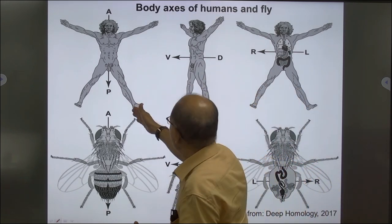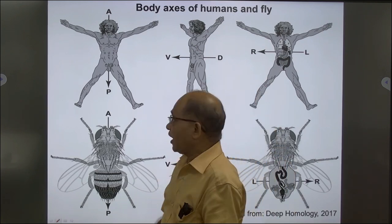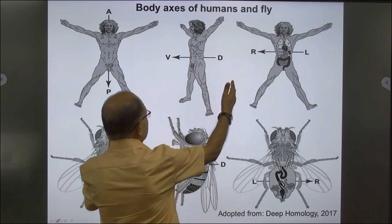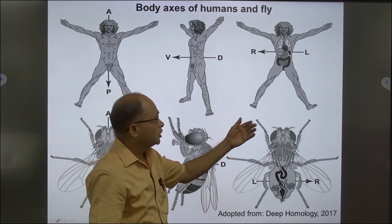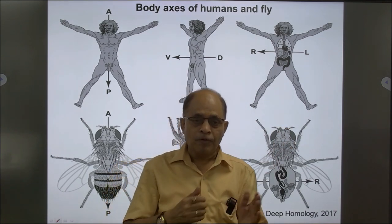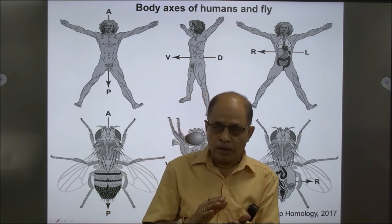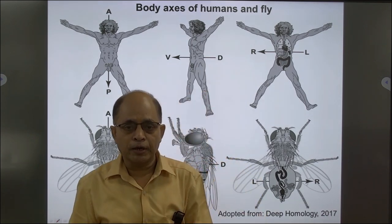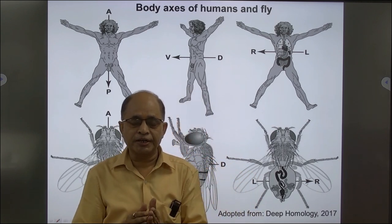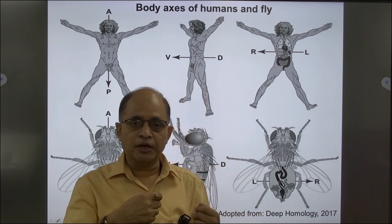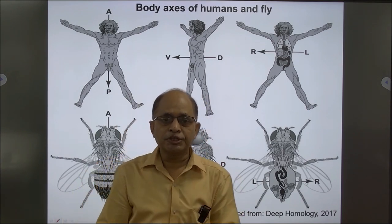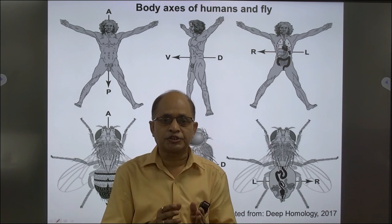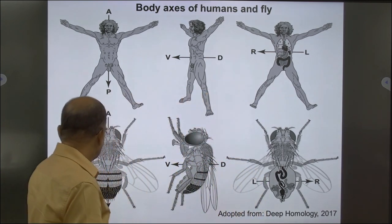If you see the body axes also — in humans as well as in Drosophila — the anterior-posterior axis is present; flies also have anterior and posterior positions. Similarly dorsal and ventral positions are fixed, and right and left sides are also fixed. If during development the anterior-posterior, dorsal-ventral, or left-right sides are not decided, then the organs that would develop in future would be dislocated. Because of that, during development these axes are fixed and further growth and development occurs on that basis.